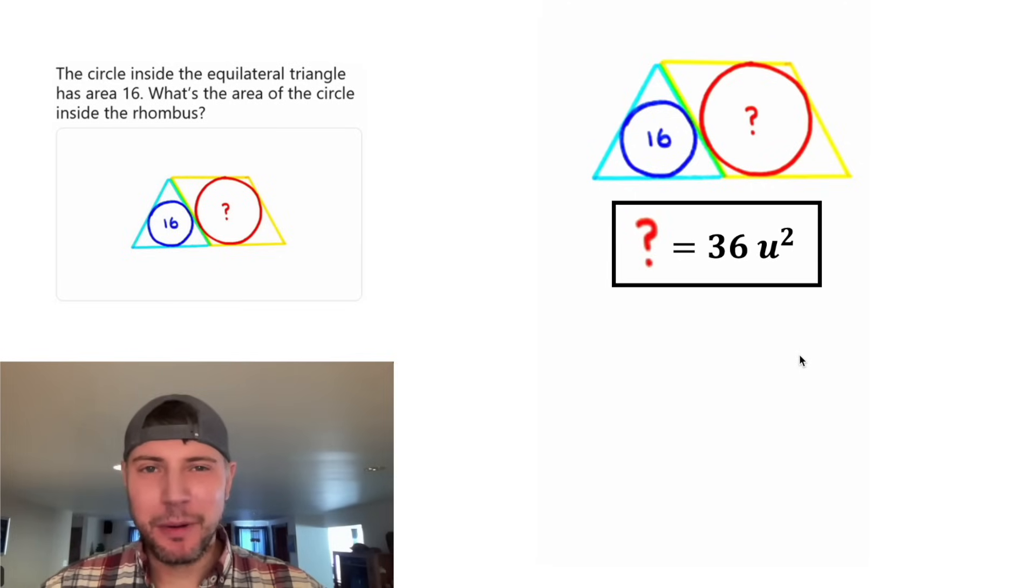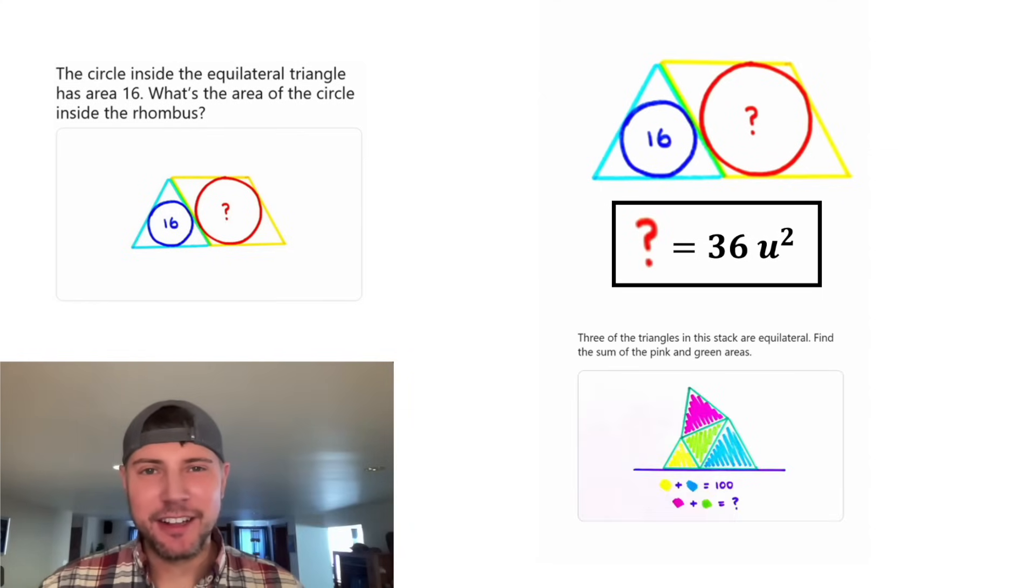This looks important. Let's put a box around it. How exciting. Here's the next question on the Advent calendar. It says three of the triangles are equilateral. That would end up being the pink one, the blue one, and the yellow one. And then this green one is not equilateral. Find the sum of the pink and green areas. And we're given that the sum of the yellow and blue is 100. This looks like it'll be a fun one. How exciting.